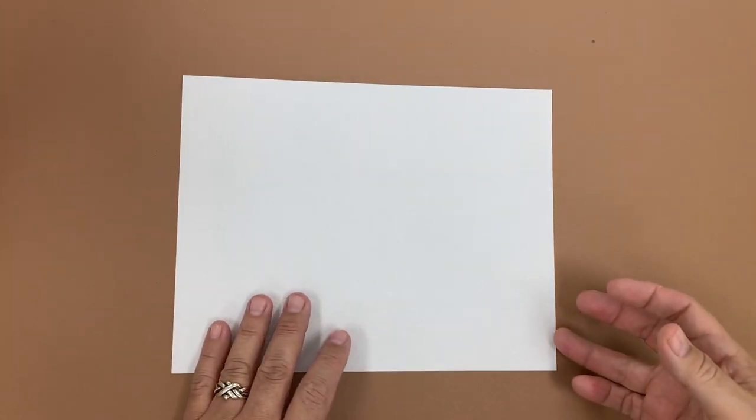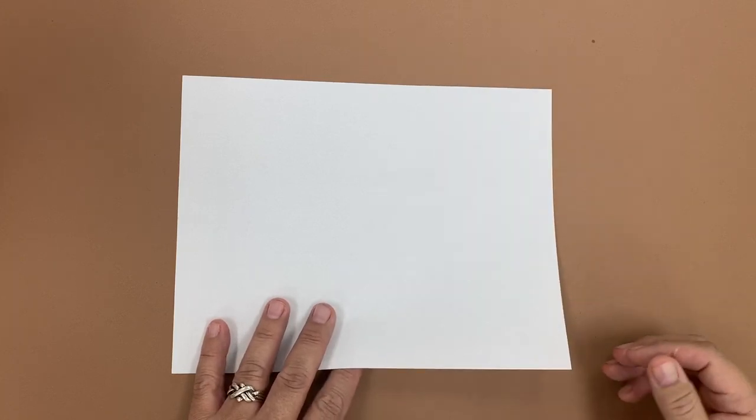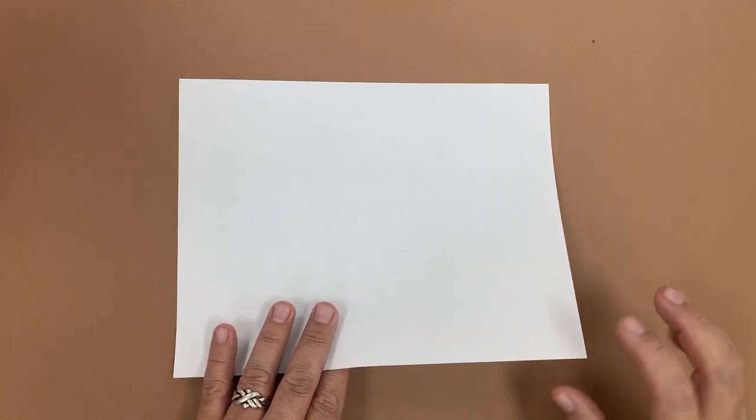We're going to make a six-pointed snowflake, and we won't have to use a compass or protractor in order to make the six points. There's a little trick to this.